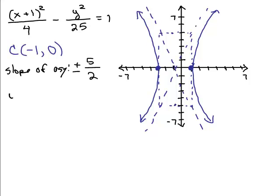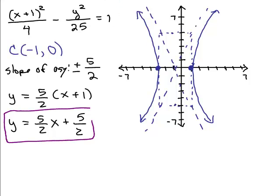So one will be Y equals plus 5 halves but instead of X, we're writing X plus 1. So if we wanted to put this in slope intercept form, all I have to do is distribute my 5 halves. So that is one of the asymptotes right here.